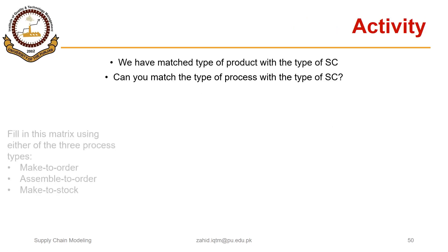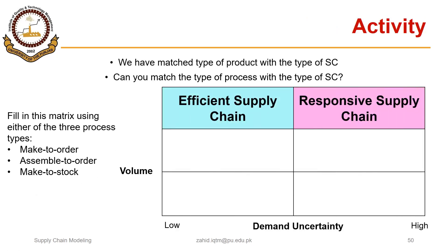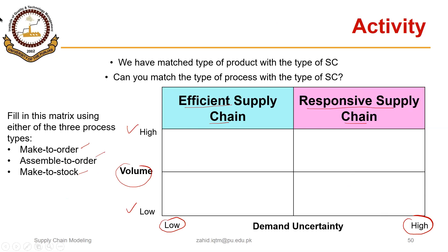There is an activity here: on the x-axis is demand uncertainty, increasing from low to high, and on the y-axis is volume, also increasing from low to high. You are required to fill four cells using make-to-order, assemble-to-order, or make-to-stock. In simple words, link the two types of supply chains with one of these three manufacturing environments. Pause the video and try to fill in the cells before continuing.